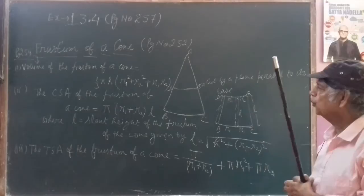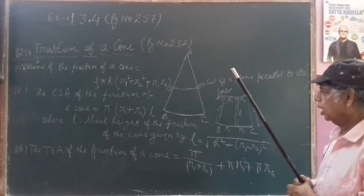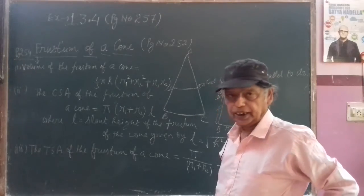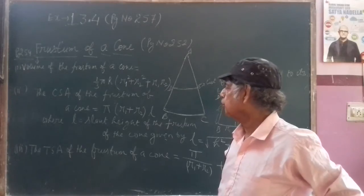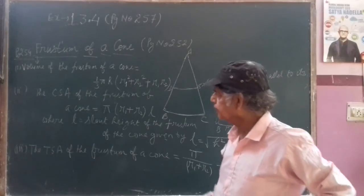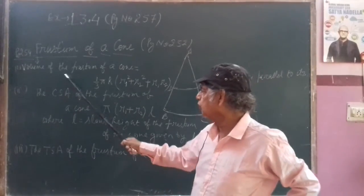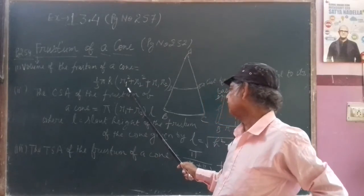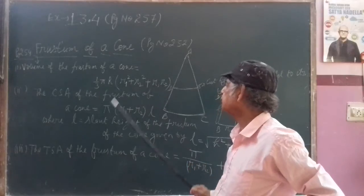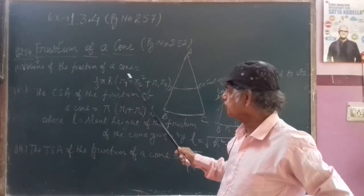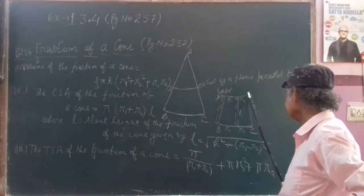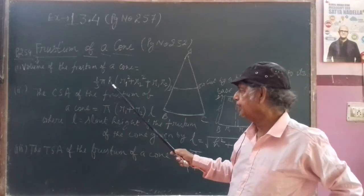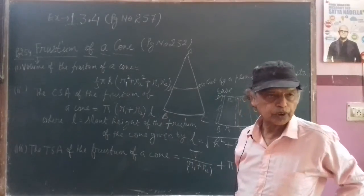Now I will discuss some formulas. There are three formulas on which all the exercises depend — there are five sums and these formulas are applied in each. The volume of the frustum of the cone is given by the formula: one-third pi h multiplied by (R1 squared plus R2 squared plus R1 R2). This is the volume of the frustum of a cone.